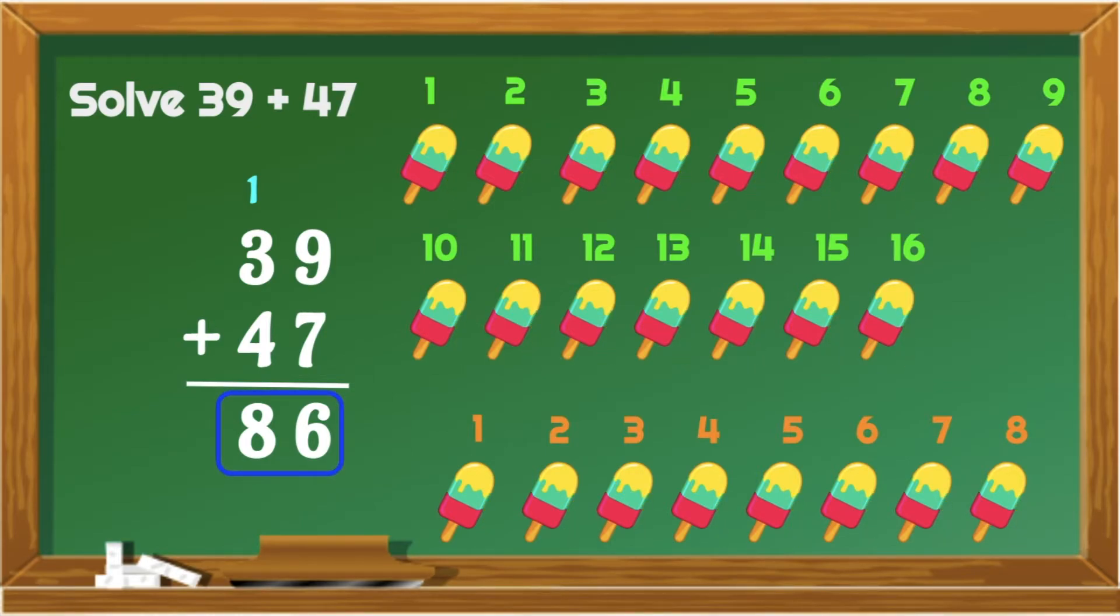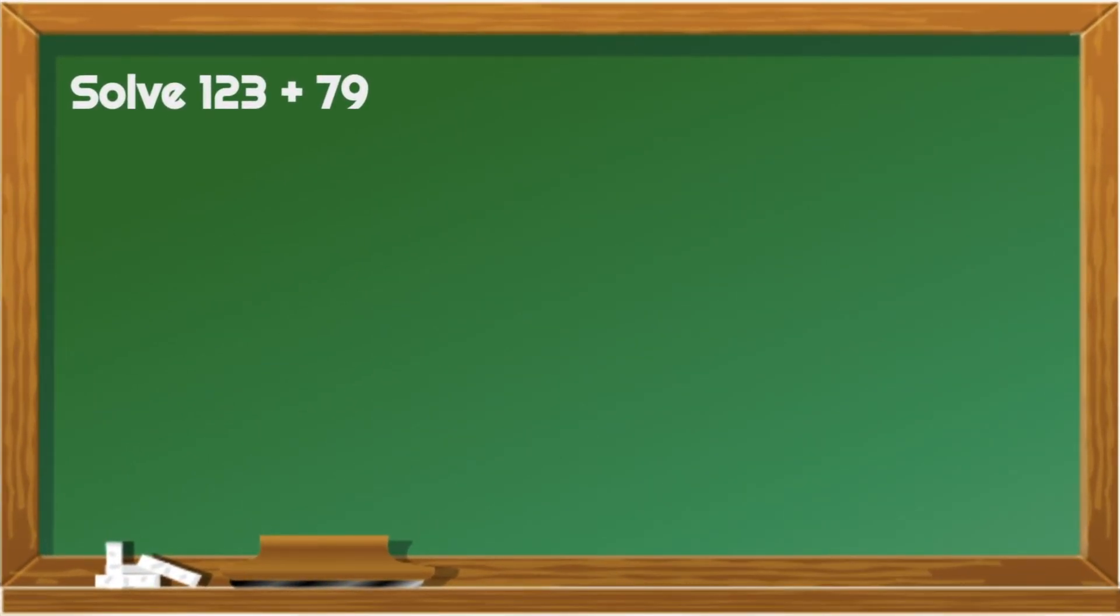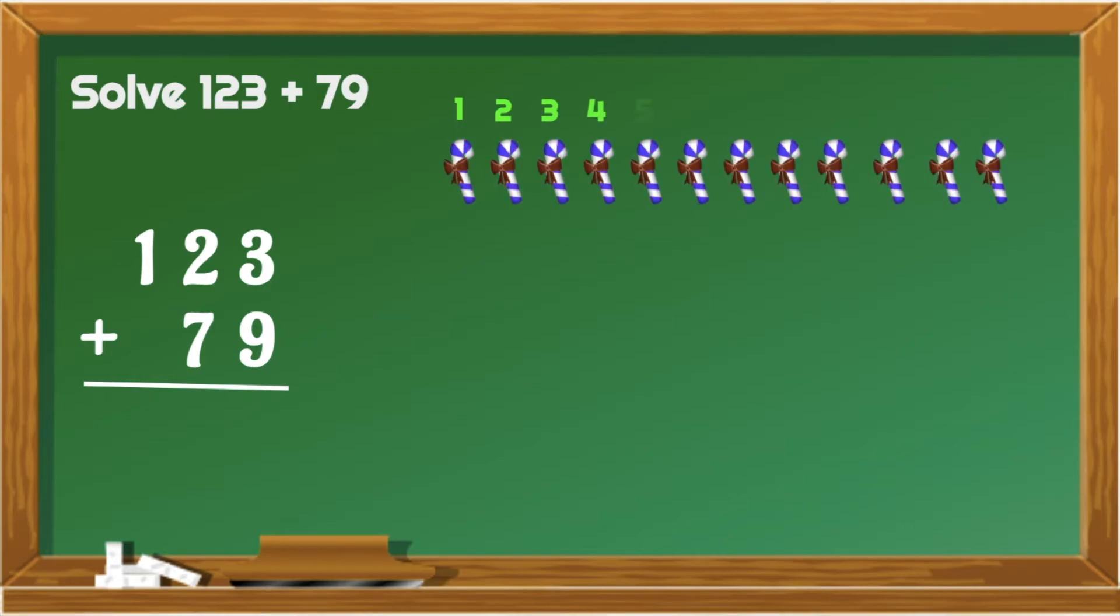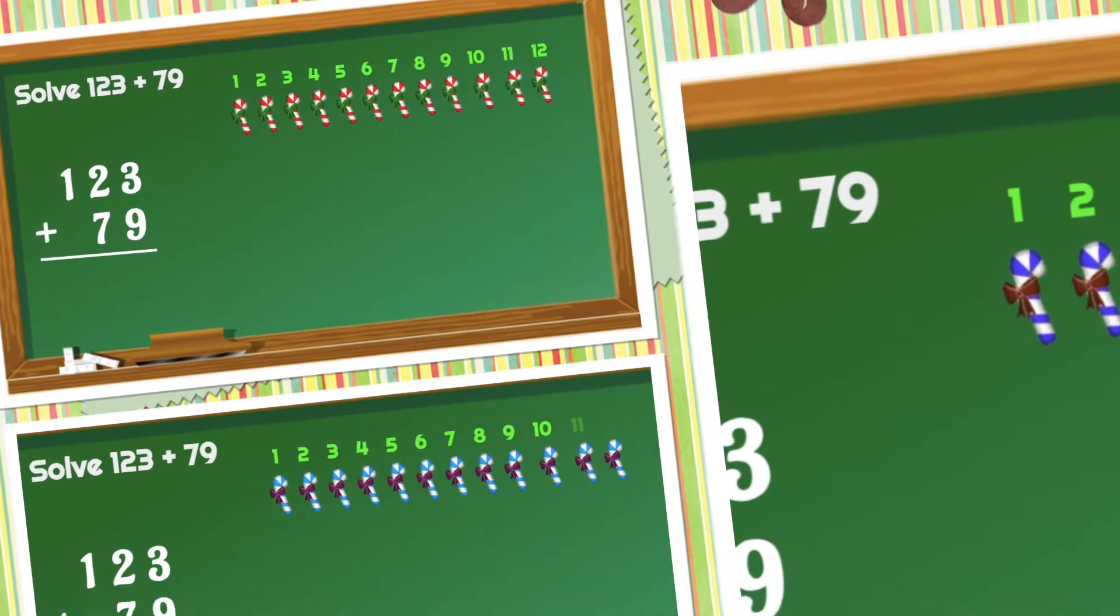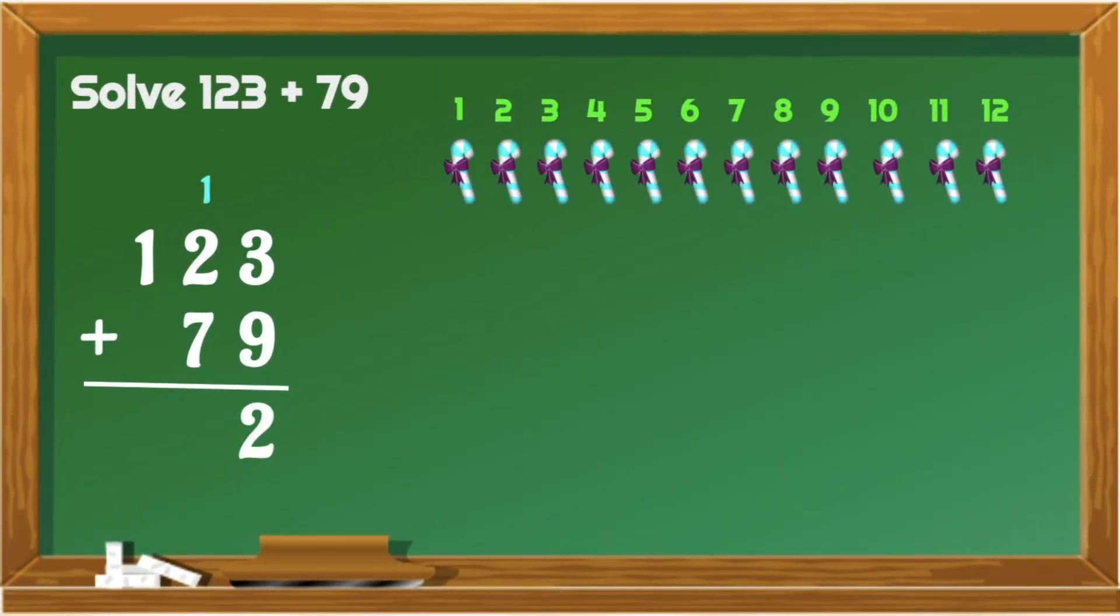This time, we're going to have 3 digits in our first addend. We need to solve 123 plus 79. Again, list down the addends into columns. Start with the ones place. That's 3 plus 9. So, from 3, let's add 9 more. 4, 5, 6, 7, 8, 9, 10, 11, 12. Put 2 below 9 and carry 1 above 2.